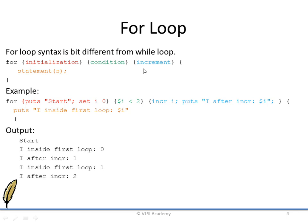Hence the output of the loop will be as follows. For reference we have put a 'put' statement in all elements of the for loop to help understand the flow. During initialization the start value will be printed. After that the condition is checked and if it is satisfied the body executes — 'i inside first loop' with the value of i as 0 will be printed. After that the increment will happen and 'i after increment' with the incremented value of i will be printed. Then it goes back inside the loop and 'i inside first loop' will be printed with value of i as 1.